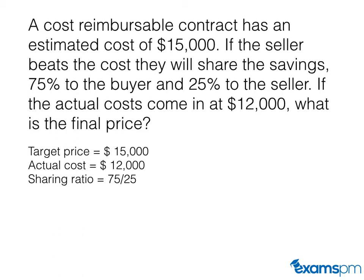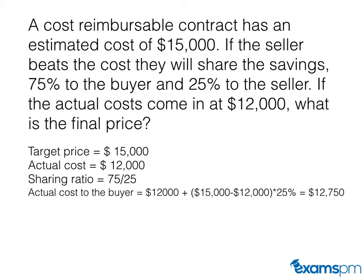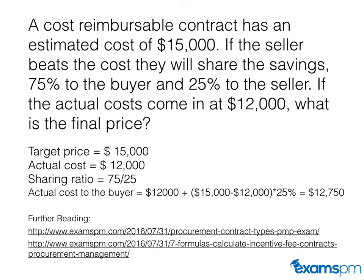The actual cost to the buyer equals the $12,000 actual project cost plus the incentive fee paid to the seller. To calculate the seller's incentive fee, take the target price minus the actual price — $15,000 minus $12,000 equals $3,000 — times the seller's share of 25%. Adding $750 to $12,000 gives the final price of $12,750. Further reading links are included in the show notes.